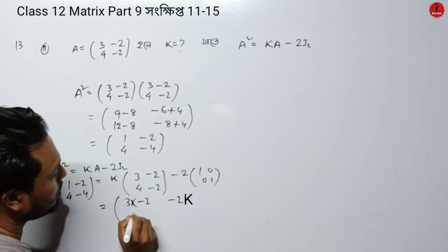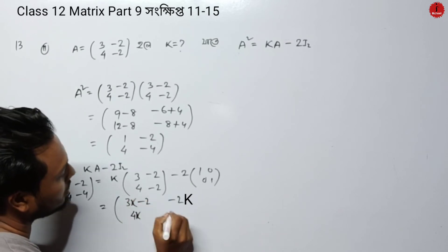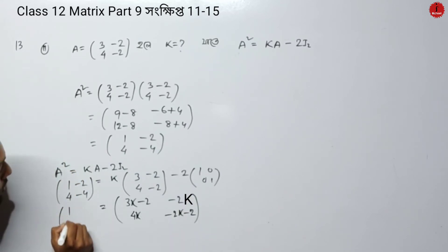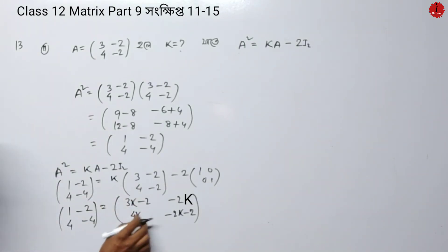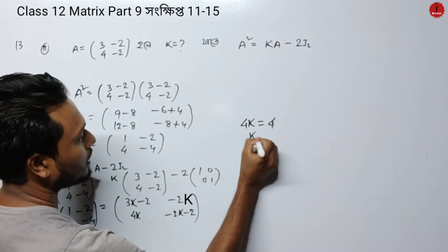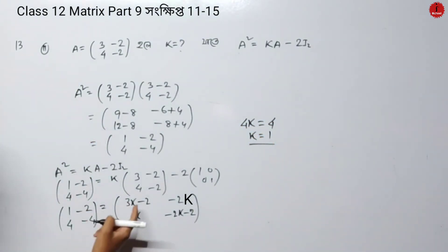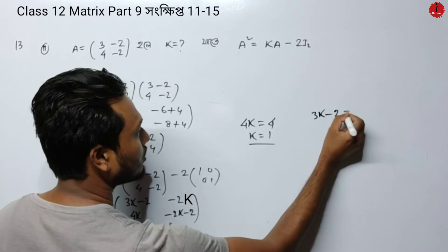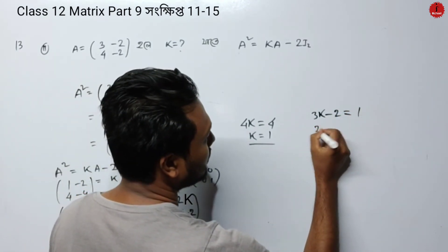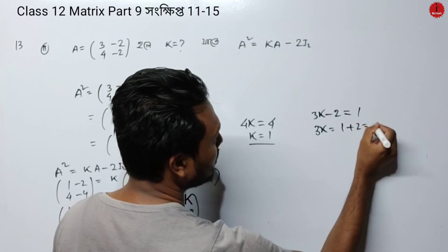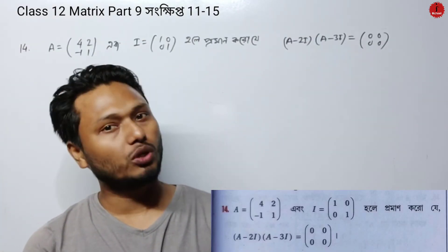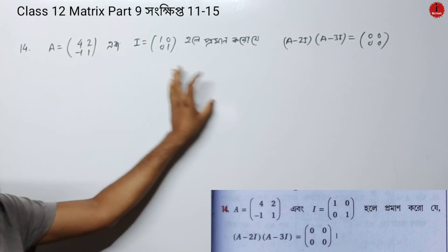So comparing entries: A² = KA - 2I. We get equations like 3K - 2 = 1, giving 3K = 3, so K equals 1. Checking other entries: 4K = 4 confirms K = 1. So the value of K is 1. The solution satisfies all matrix entries consistently.